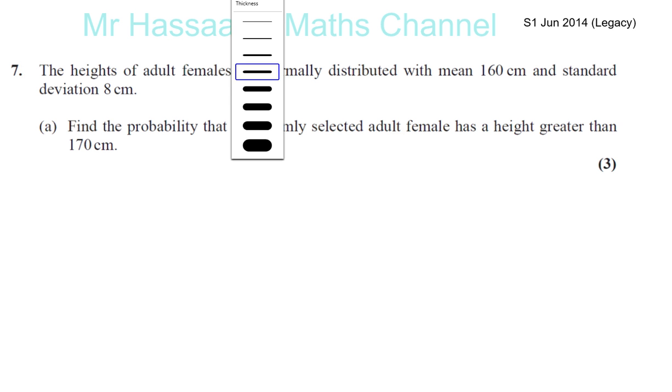And we have a question about normal distribution. The heights of adult females are normally distributed with a mean of 160 and standard deviation of 8. So the heights are normally distributed with a mean of 160 centimeters and a standard deviation of 8.